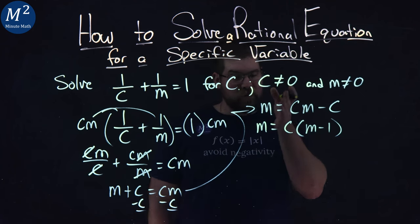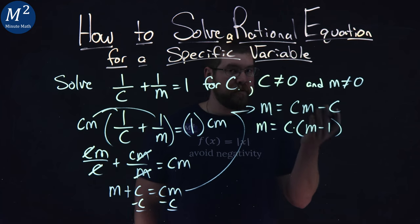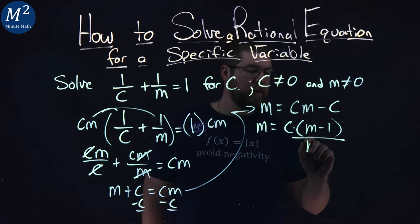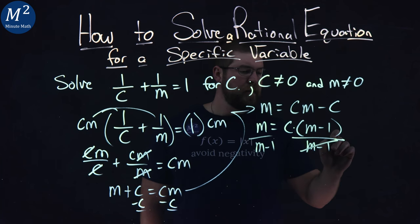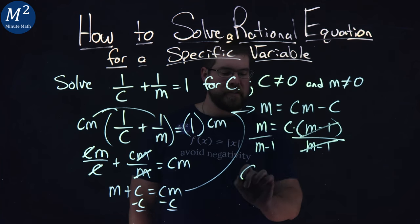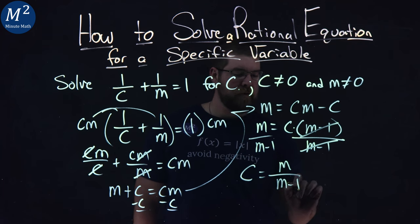Now, from here, don't get confused with the parentheses and c. I have multiplication going on. Opposite of multiplication is division. Divide both sides by m - 1. And we can rewrite it, m - 1 cancels. I'll put c comes first, and c equals m over m - 1.